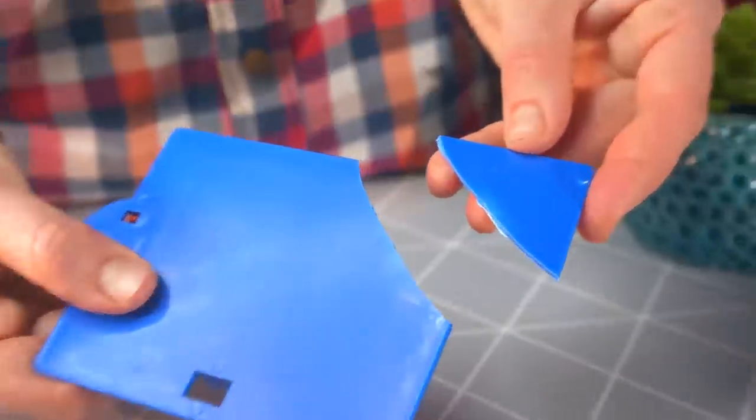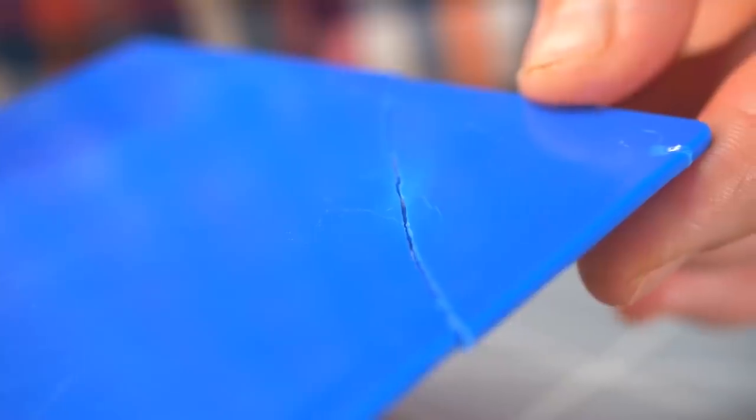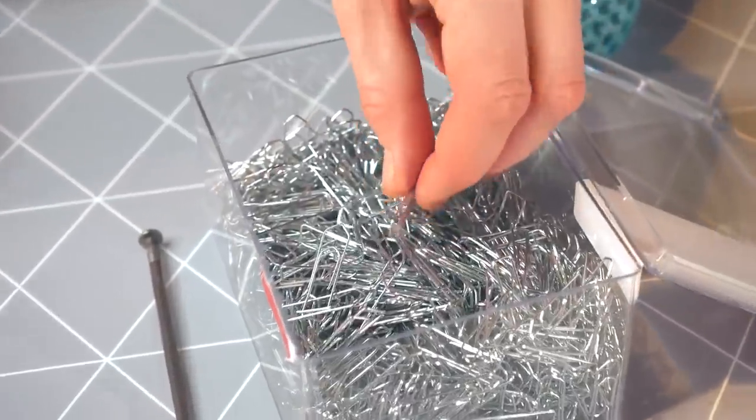If you have cracked some plastic product and you need to fix it back in a stronger way than just glue, then a simple paper clip will help.